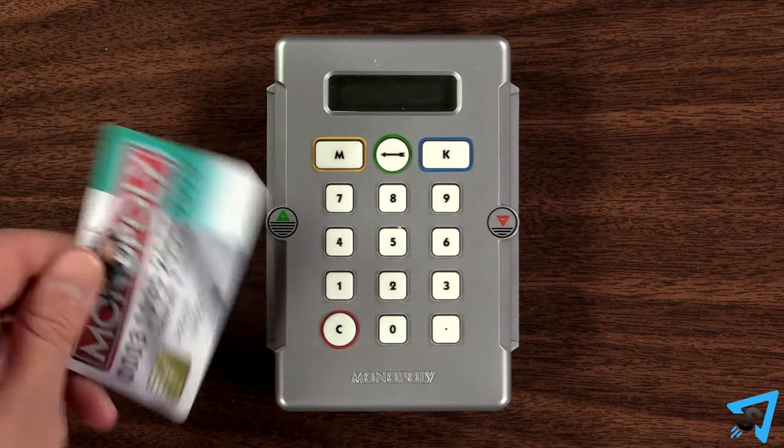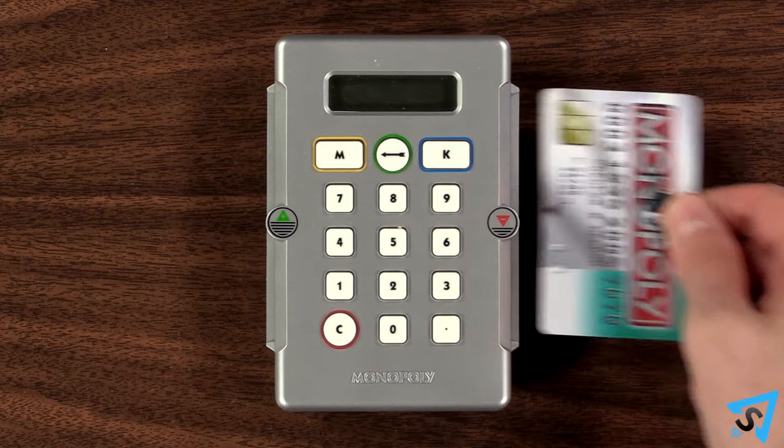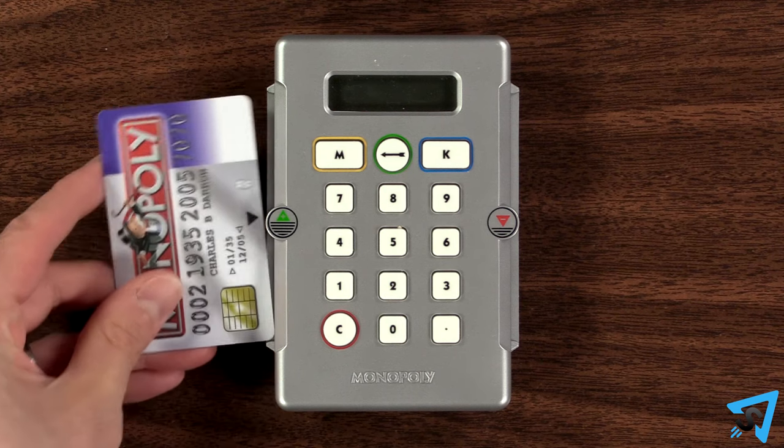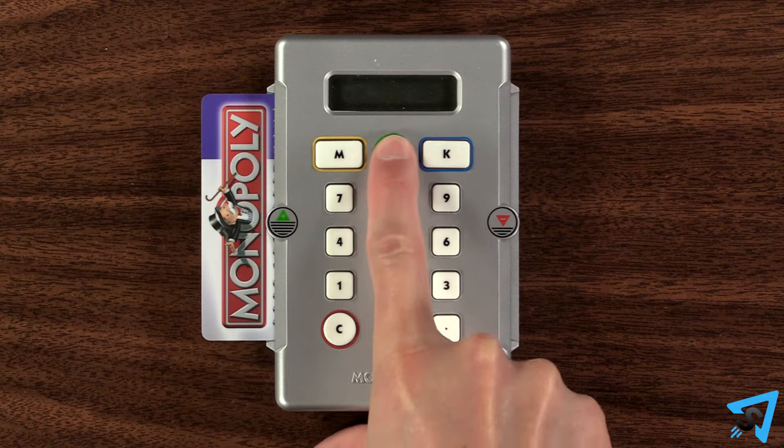To view your balance, insert your card into either side, then remove it without pressing any buttons. When you land on Go, insert your card and press the Go arrow.